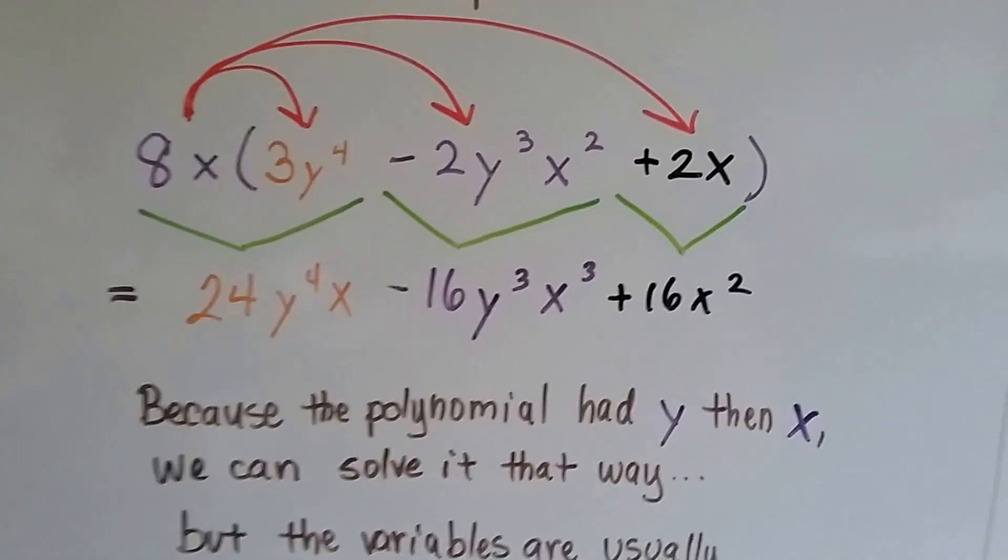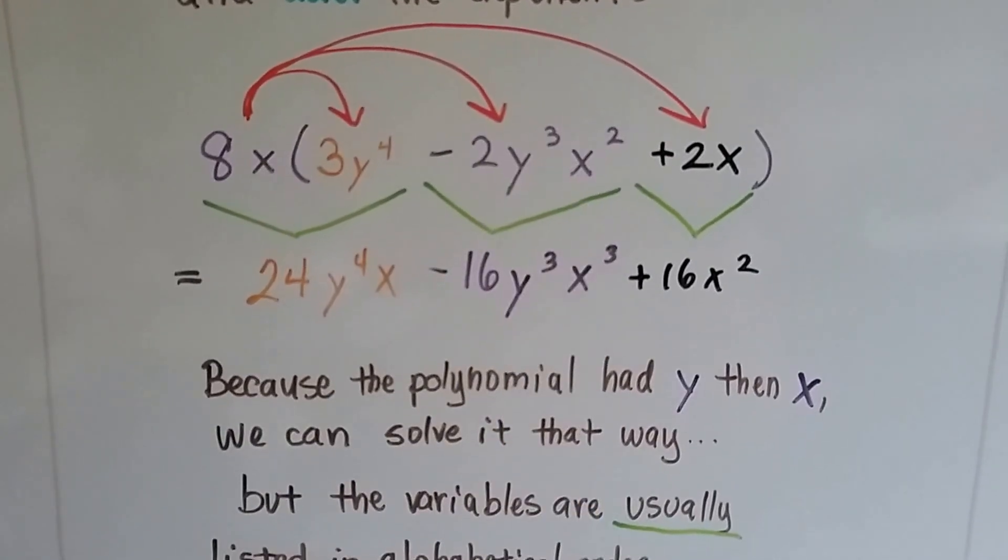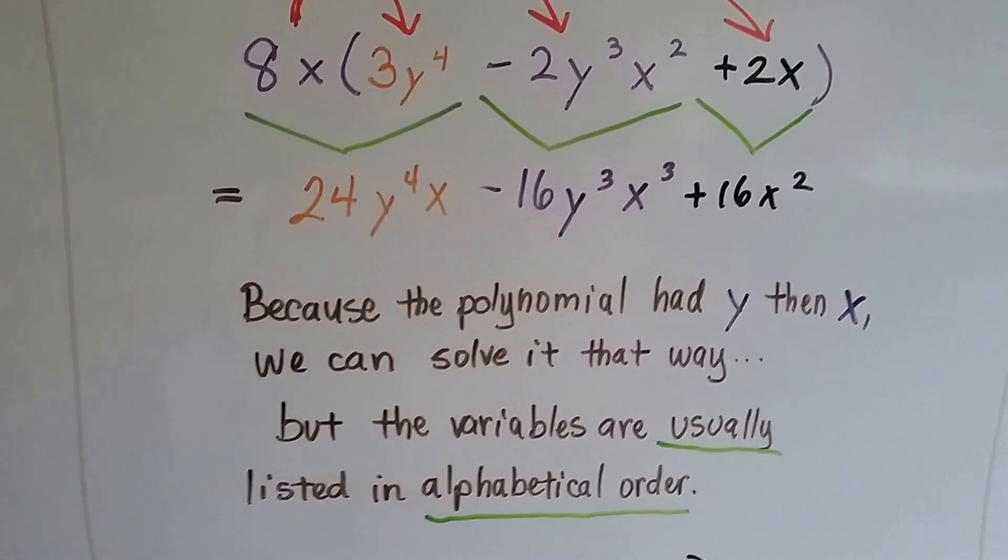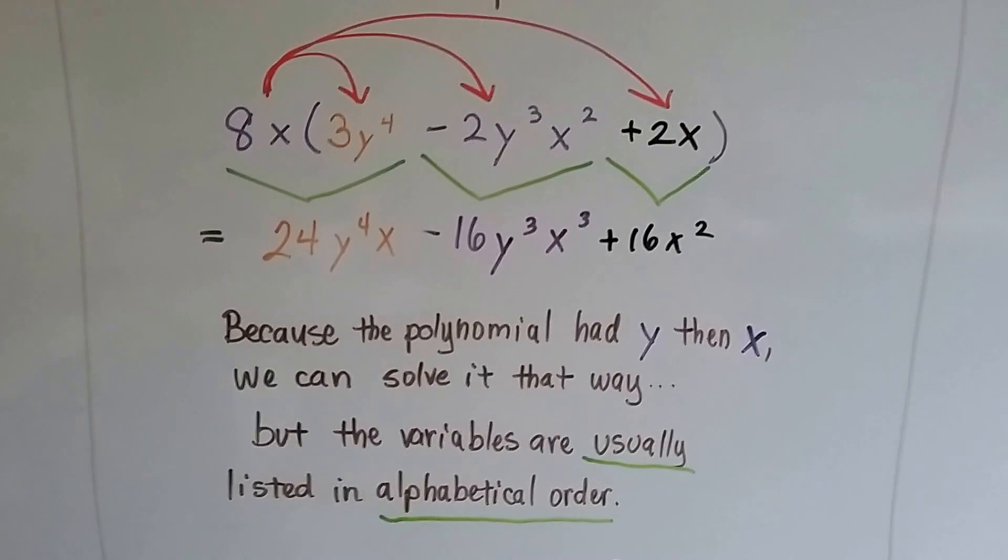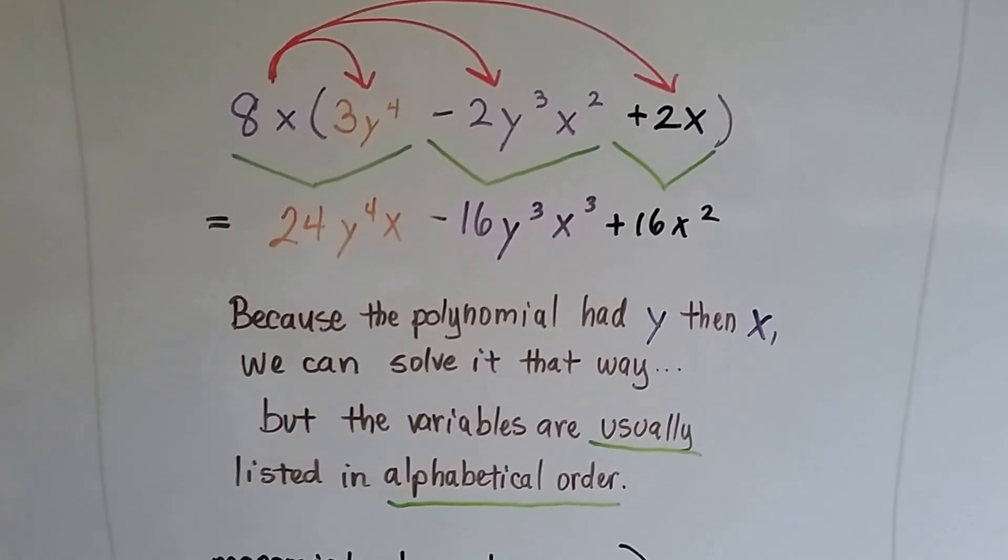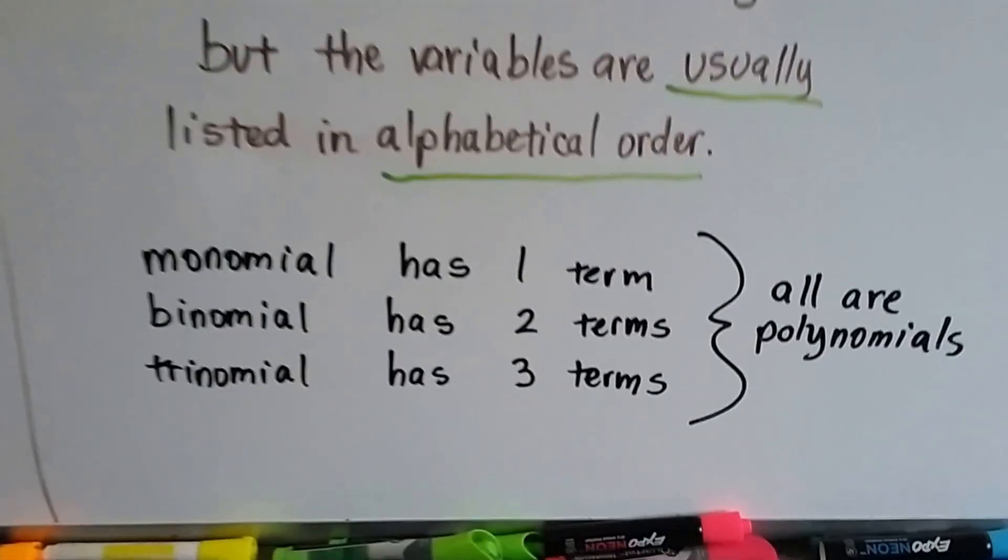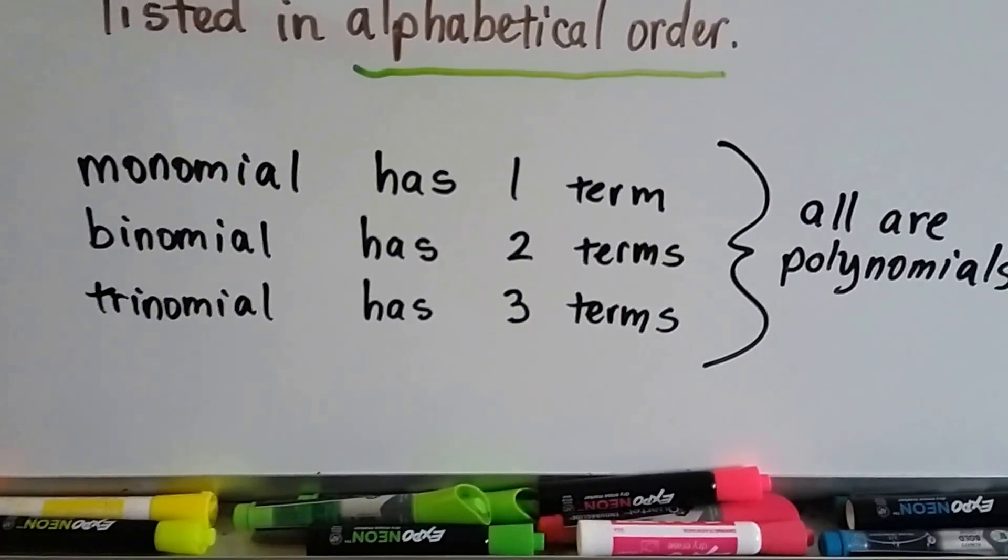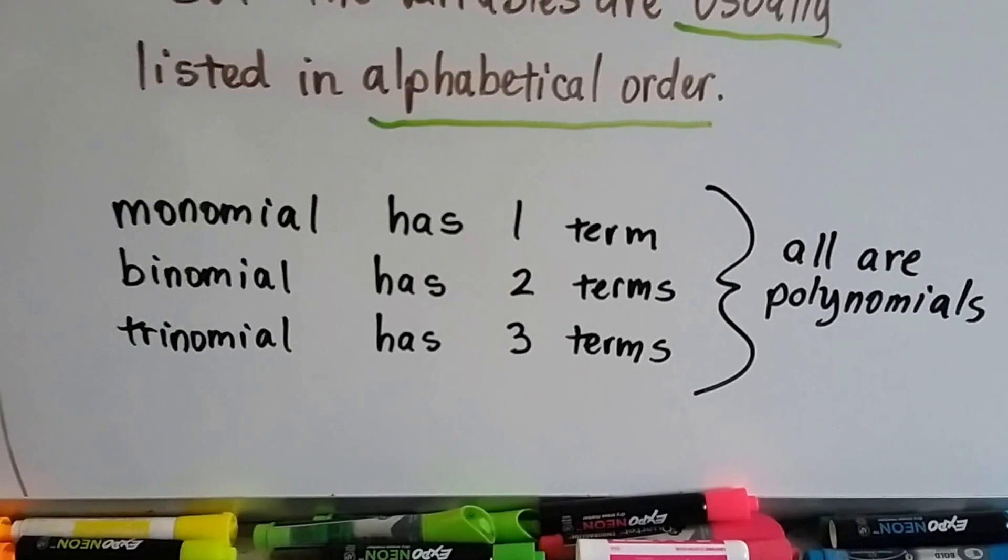So because the polynomial had the y and then the x, see how it's got the y and then the x, we can solve it that way. But the variables are usually listed in alphabetical order, x, y, z. But if you see it and it's mixed up like this, it's okay. You can just do it the way it's shown. It won't be that big of a deal. So remember, a monomial has one term, a binomial has two terms, and a trinomial has three terms. And they're all polynomials.